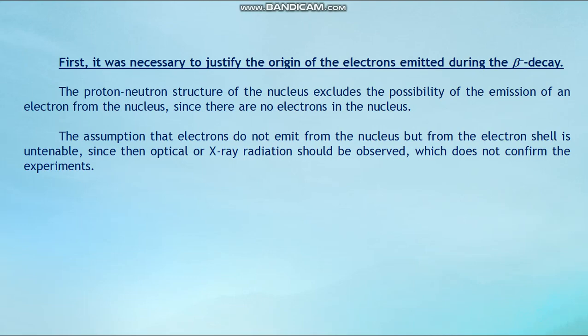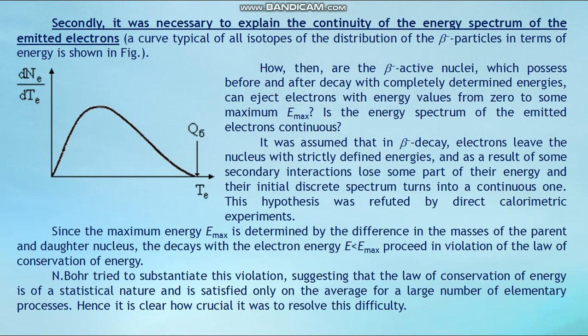Regarding the second difficulty — the continuity of the energy spectrum: a typical curve for beta minus particles shows their distribution in energy. How can beta minus active nuclei, with completely determinate energies before and after decay, eject electrons with energy values ranging from zero to some maximum E_max? It was assumed that electrons leave the nucleus with strictly defined energies and lose energy through secondary interactions, turning a discrete spectrum into a continuous one. However, this hypothesis was refuted by direct calorimeter experiments.